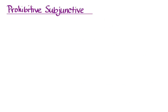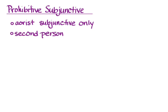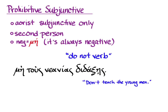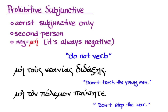Our last independent subjunctive is the prohibitive subjunctive. And just as it sounds, Greek uses it to tell someone not to do something. It can be the aorist subjunctive only, and it will be in the second person — singular or plural. The negative is mē, but of course it's always negative. The default translation is 'do not verb.' An example: 'mē tous neanias didaxēs' — 'don't teach the young men.' Or 'mē ton polemon pausēte' — 'don't stop the war.' You can prohibit any action with the prohibitive subjunctive.